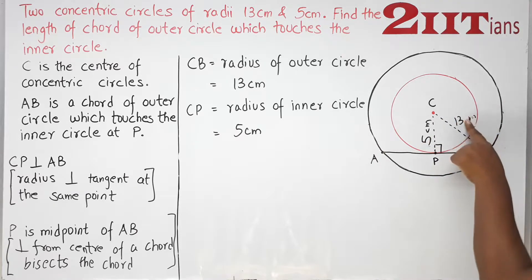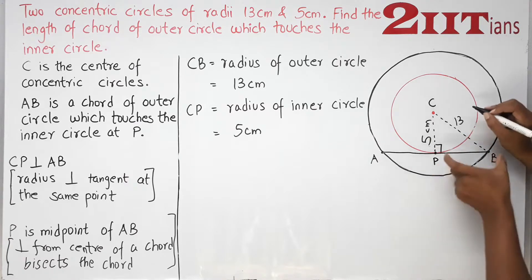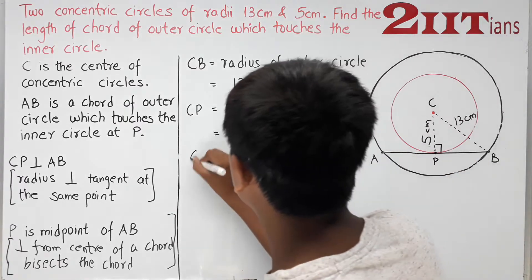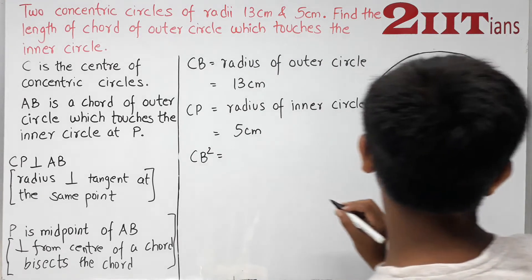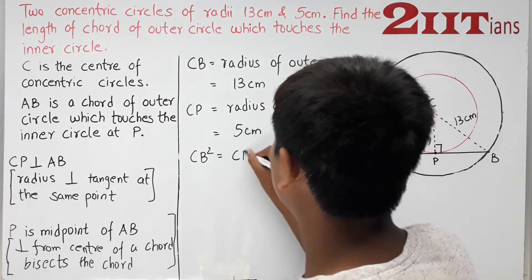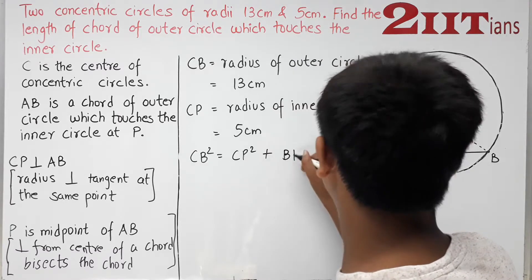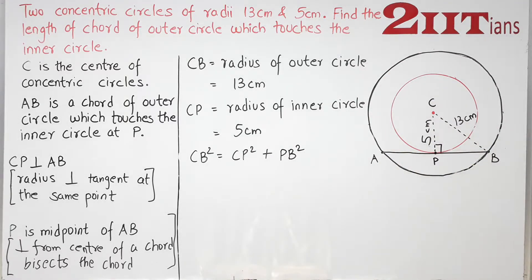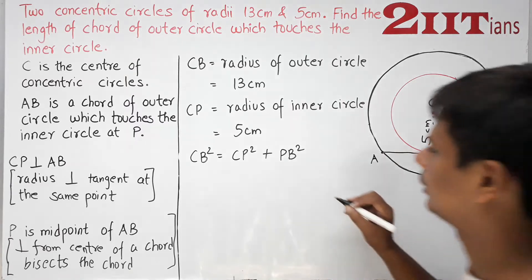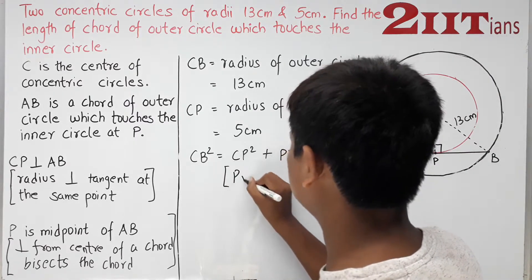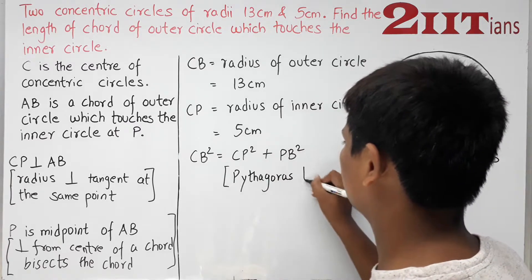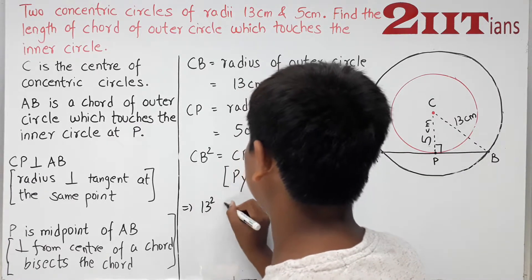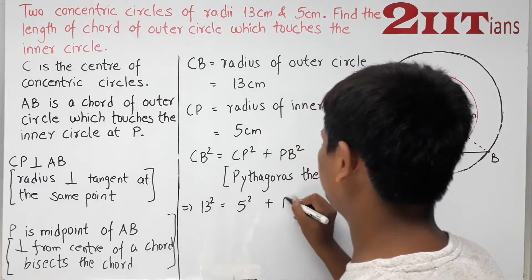This is 5, this is 13. You can recognize the Pythagoras triplet immediately, but let's solve it. CB² = CP² + PB². Why? By Pythagoras theorem.